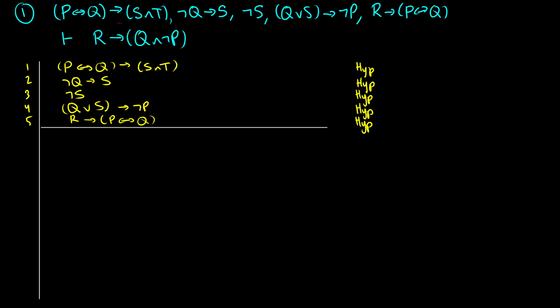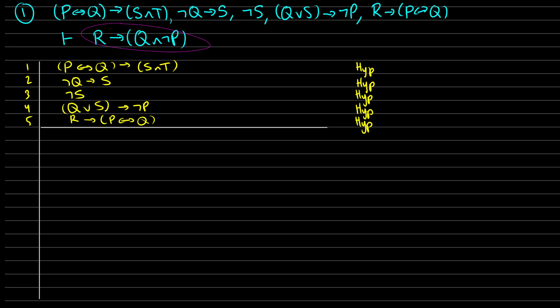Our goal is to show that if we have R, then we get Q and ¬P. So what we'll have to do — let me turn the lines on — is we're going to have to introduce a sub-proof. In that sub-proof, on line 6, we're going to assume R, with the intention to use a conditional proof (CP) to introduce the arrow.